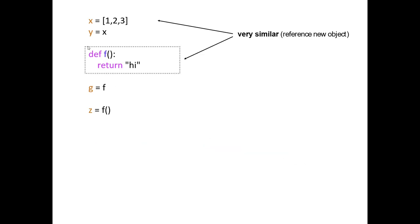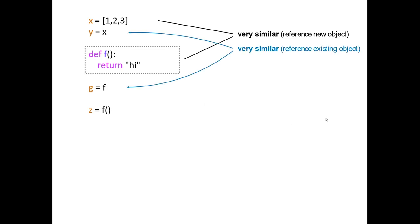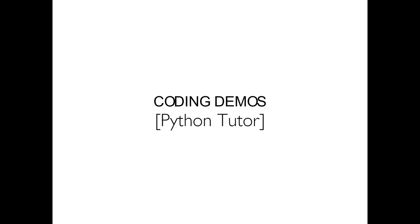The line creating x as a new list and the line defining f are very similar — both create brand new objects on the heap with variables on the stack pointing to them. Similarly, y equals x and g equals f are alike — both create new variables that refer to existing objects. The key difference is that g equals f creates a reference to an existing function object, while z equals f() actually calls or invokes the function, gets a return value, and assigns that to z. I'm going to jump over to Python Tutor now and do some coding demos.